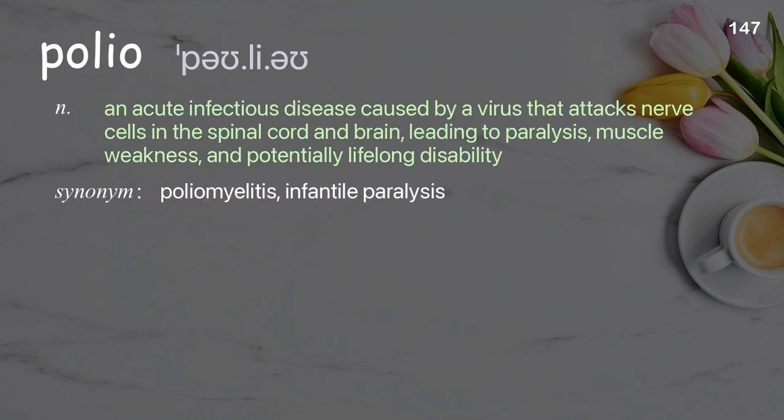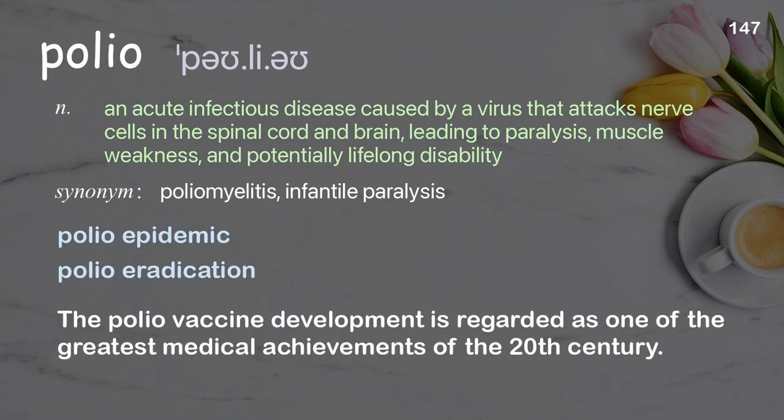Polio: an acute infectious disease caused by a virus that attacks nerve cells in the spinal cord and brain, leading to paralysis, muscle weakness, and potentially lifelong disability. Examples: polio epidemic, polio eradication. The polio vaccine development is regarded as one of the greatest medical achievements of the 20th century.